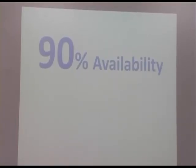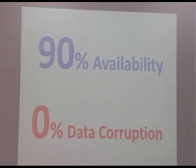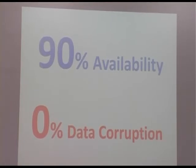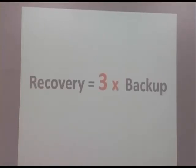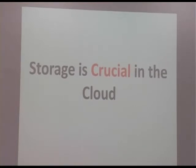Even if someone offers only 90% availability, I'd be okay with it if they provide zero percentage data corruption. What if your Gmail is down for one hour every quarter? I'm okay with that. But what if your complete Gmail data is corrupted and unrecoverable? Downtime is better. You have to make sure you have 100% data protection and zero data corruption. If something goes wrong with storage, recovery takes three times longer than backup time. Storage is very crucial in the cloud and people often ignore it.